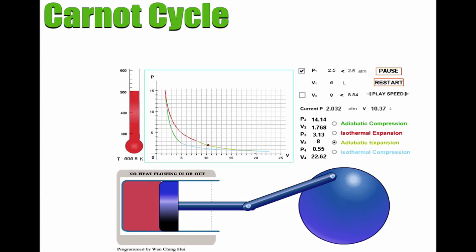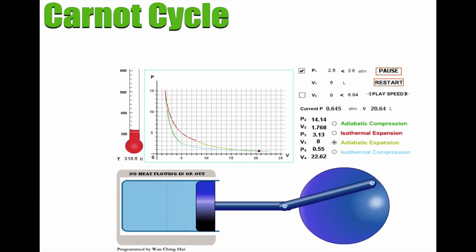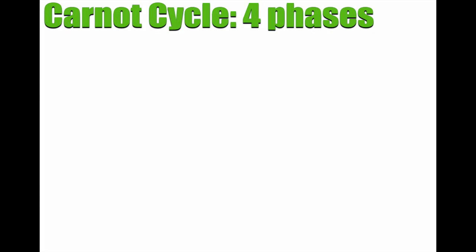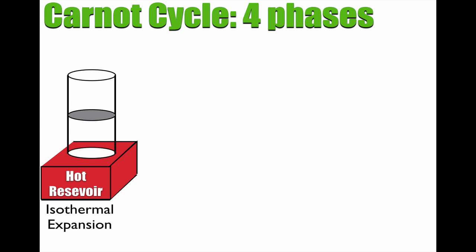Let's take another look at what's going on in the Carnot cycle. There are basically four phases or four processes in the Carnot cycle. So here I've got a little example. I've got this hot reservoir, and I've got a cylinder with a piston in it. And that's your isothermal expansion. The hot reservoir heats the gas, and that causes the gas to expand.